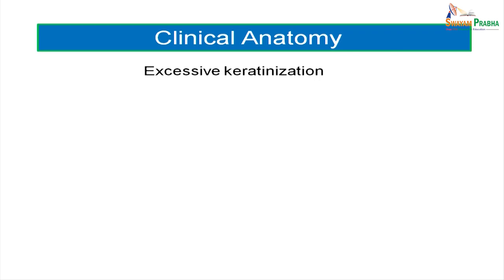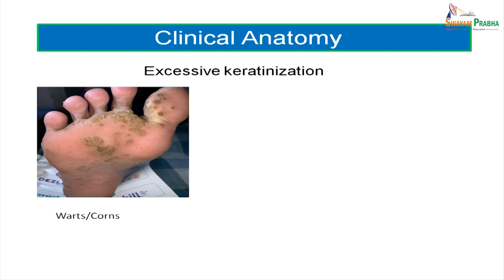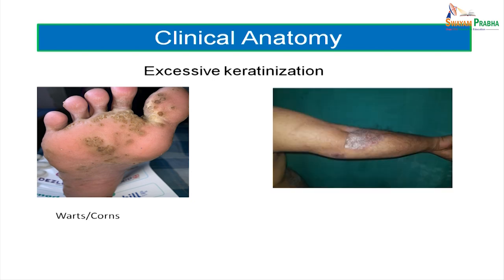The next clinical entity is excessive keratinization. In psoriasis, there is excessive production of keratin associated with excessive epidermal turnover rate — cells are produced in excess and keratin filaments are produced in excess. These conditions can present as warts, corns, or psoriasis, which is very common in the elbow regions, upper back region, or scalp — wherever there is more liability for friction, the chances of psoriasis in those regions are higher.